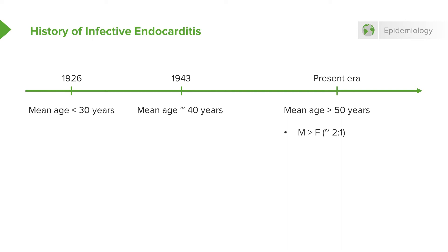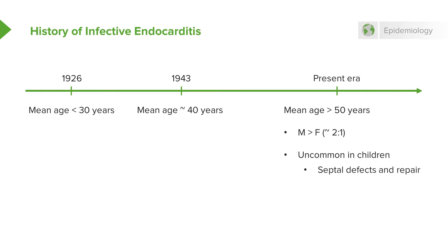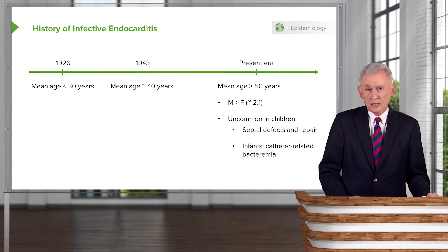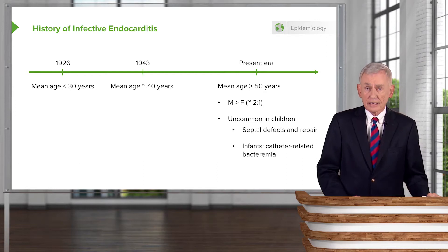Males outnumber females 2 to 1. It's an infection that's uncommon in children, unless they have some septal defect repaired related to congenital heart disease. Now infants can get infective endocarditis because small babies are now kept alive where in the past they weren't, and they have lots of catheters for venous and arterial access, so they can get endocarditis.